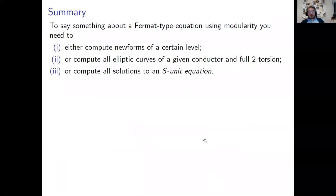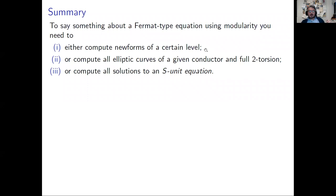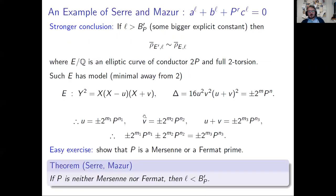As a summary, if I have a Fermat-type equation and want to use Frey curves, Galois representations of elliptic curves, and modular forms to say something about it, I end up having to do one of three things: either computing all newforms of a certain level, computing all elliptic curves of a given conductor with full 2-torsion, or computing all solutions to an S-unit equation.